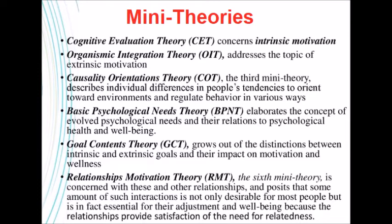Here is a brief description of these mini-theories. Cognitive evaluation theory deals with intrinsic motivation. Organismic integration theory addresses extrinsic motivation. Causality orientation theory describes individual differences. Basic psychological needs theory elaborates the concept of psychological needs. Goal content theory discusses intrinsic and extrinsic goals and their impact on motivation and wellness. And relationship motivation theory discusses the interaction and relationship between people.